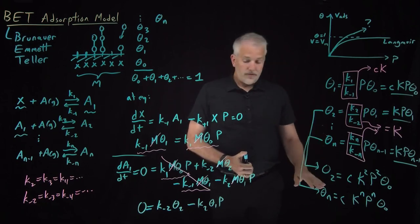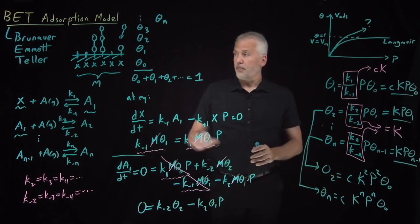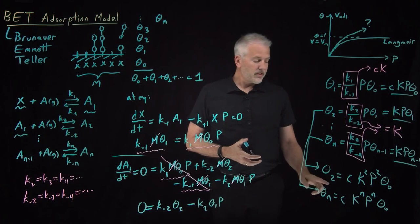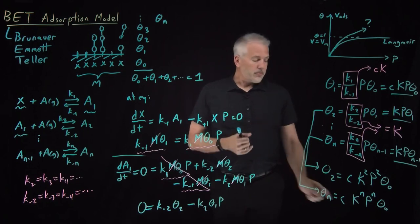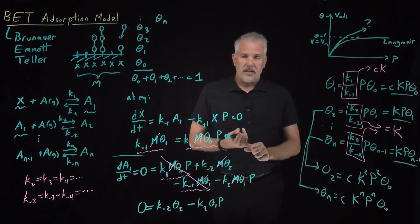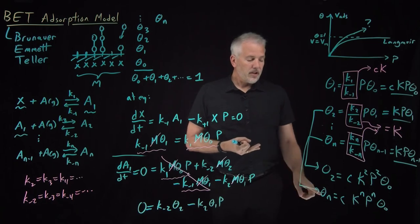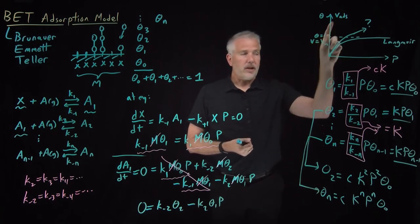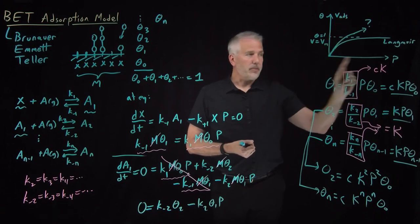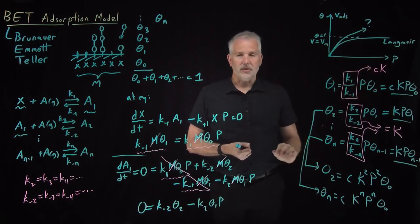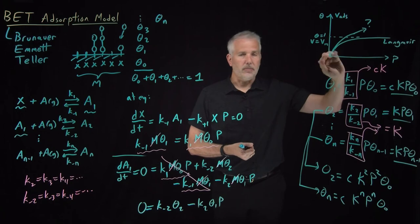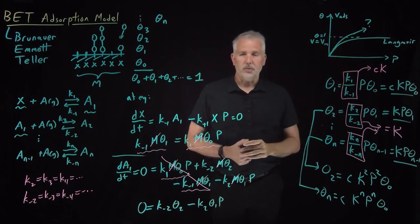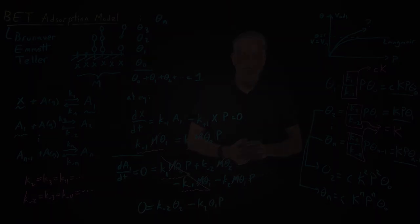We've solved the Brunauer-Emmett-Teller model in one sense, except we have two problems. Number one, we don't know what theta 0 is yet. Number two, rather than talking about how occupied each layer is, we'd rather talk about volume — how the volume adsorbed onto the surface depends on pressure. We haven't yet written this in the form of an isotherm to compare the BET model to the Langmuir model. So that's what we'll do next.